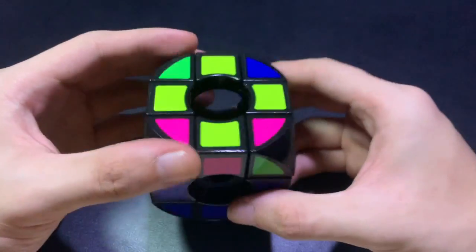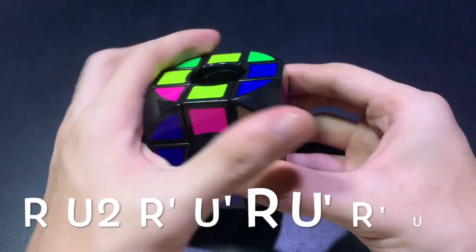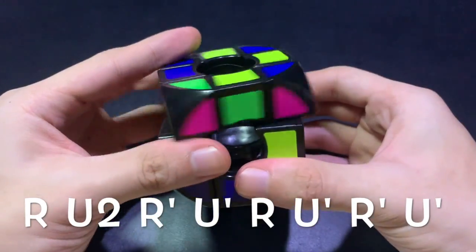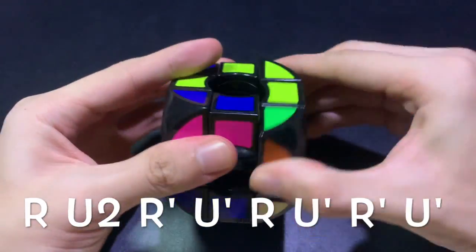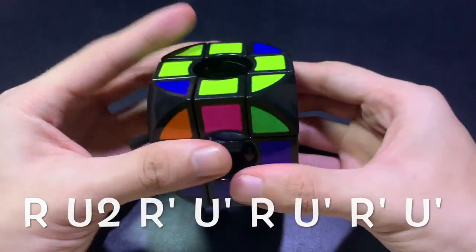Again, we have to put one correct pair away from u and the other one to the left. So orange and green. The algorithm goes like this. So it's r, u2, r prime, u prime, r, u prime, r prime, and u prime.